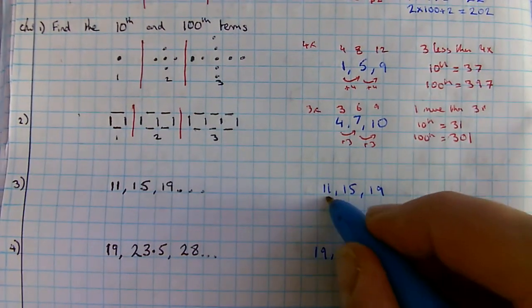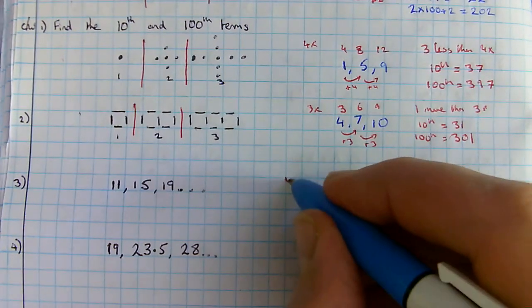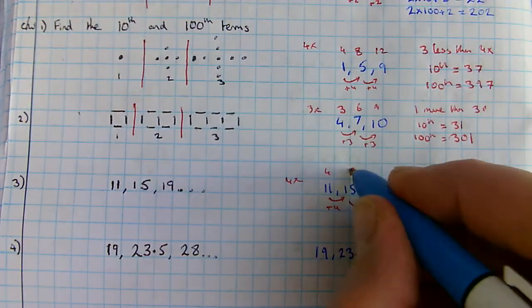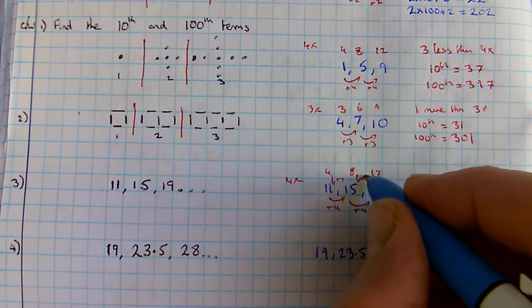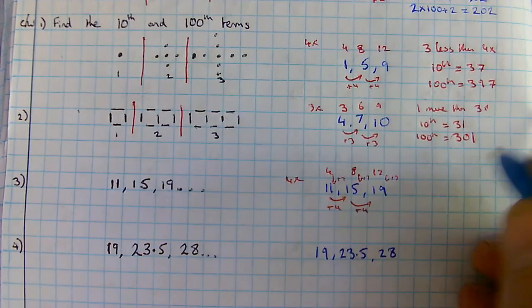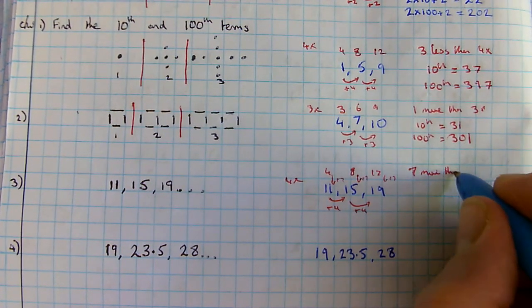Next one goes up by four each time. This is the four times table: four, eight, twelve. Looking at what that gap is, it's seven higher. So it's seven more than four times table.